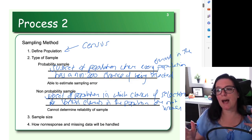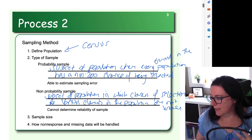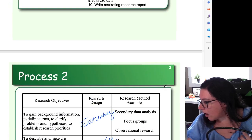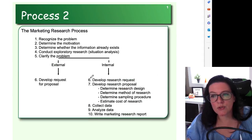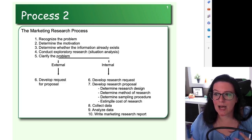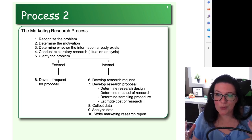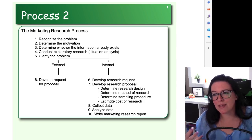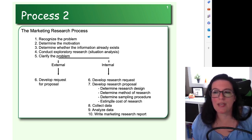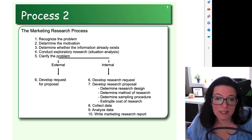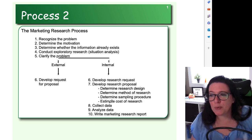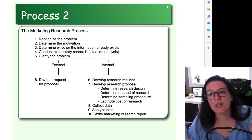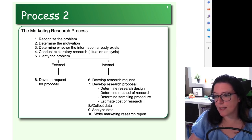So we're going to look at these different components that we would need to decide on for our research project, whether we're going internal or external. If going external, you could leave some of these decisions to the researchers doing it for you, or specify ahead of time. If doing it internally, you're going to need to decide on your research design, your research method, and your sampling procedure. We'll dive into all of these as we go through the upcoming videos.